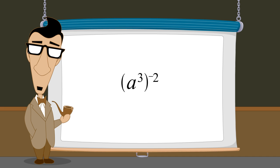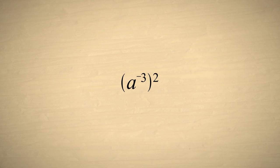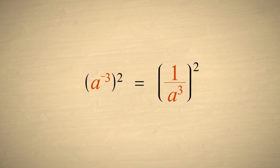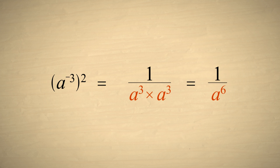Now let's try the same problem except this time we'll make the other exponent negative. We'll start by rewriting a to the negative third as one over a-cubed. And squaring one over a-cubed is the same as one over a-cubed times one over a-cubed. To multiply these fractions, we multiply their denominators, and we get one over a to the sixth power, which is the same as a to the negative sixth power.